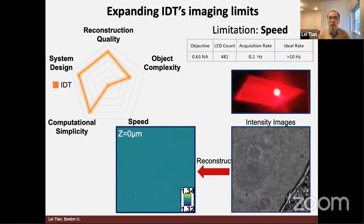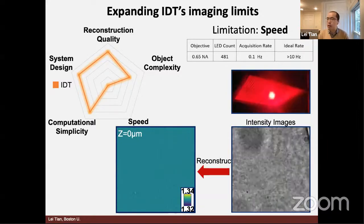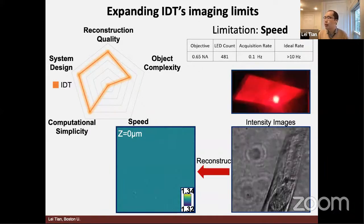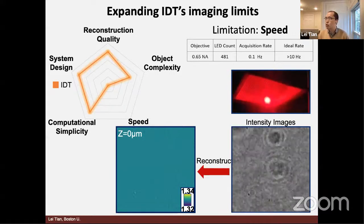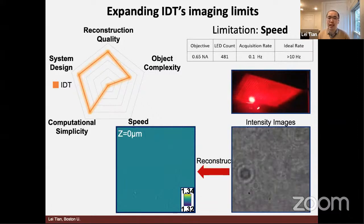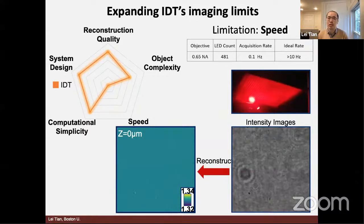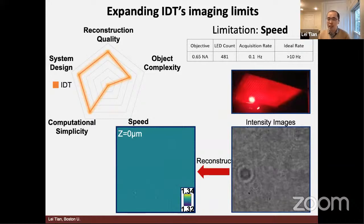When we try to apply this technique for a live sample — in this particular case it's known as C. elegans, a kind of worm that developmental biologists love to study — because the worm is alive, as we scan through the LED one at a time, within a single dataset the worm already moved quite a bit. The motion blur becomes so severe that we will not be able to correctly reconstruct the 3D information. We need to devise different methods to achieve dynamic live sample imaging with minimum motion artifacts. At the rule of thumb, for this kind of biological process, you need to achieve a data rate of about 10 Hz — in other words, capture each frame at 0.1 seconds.